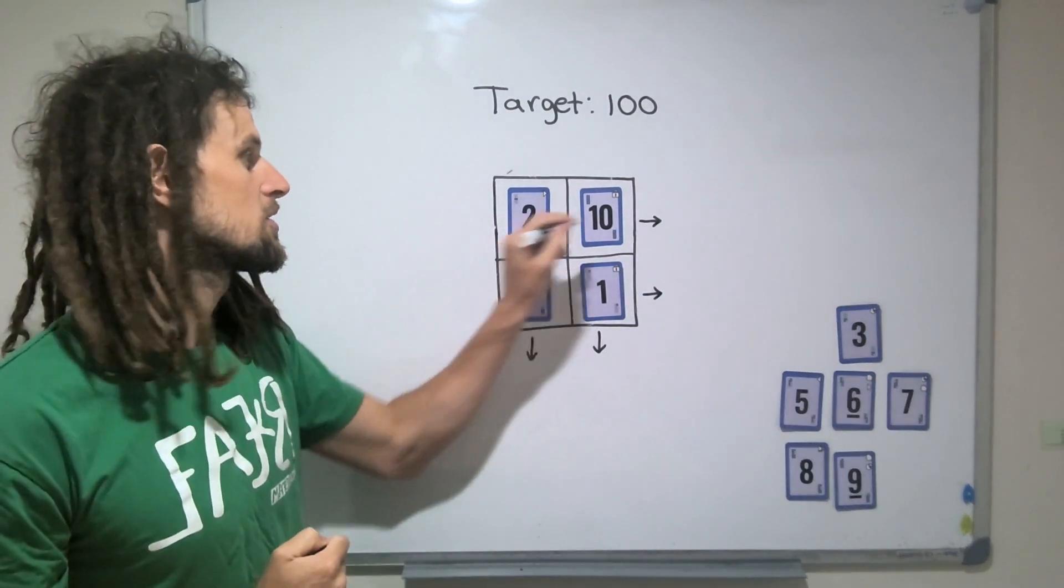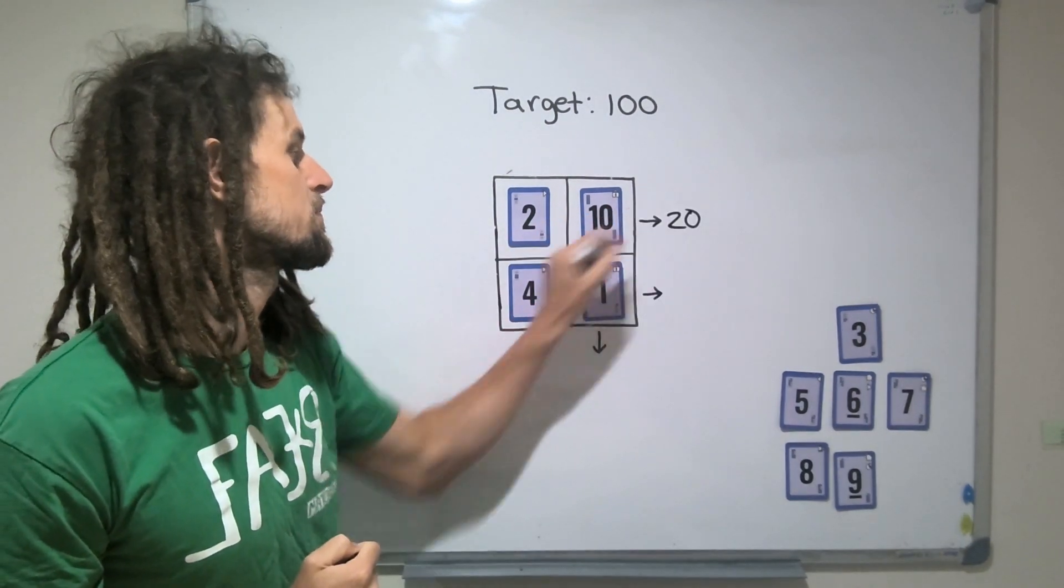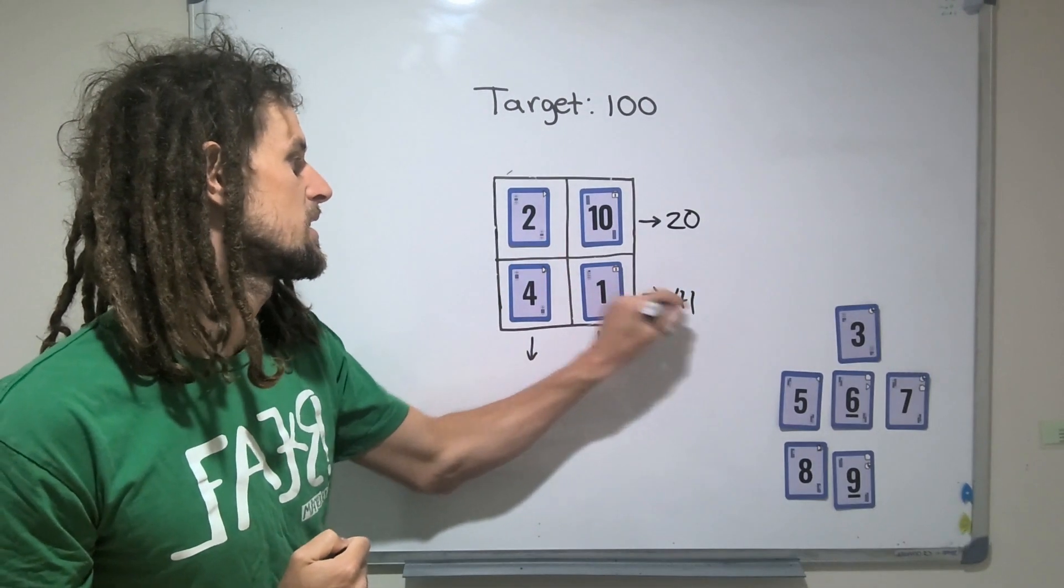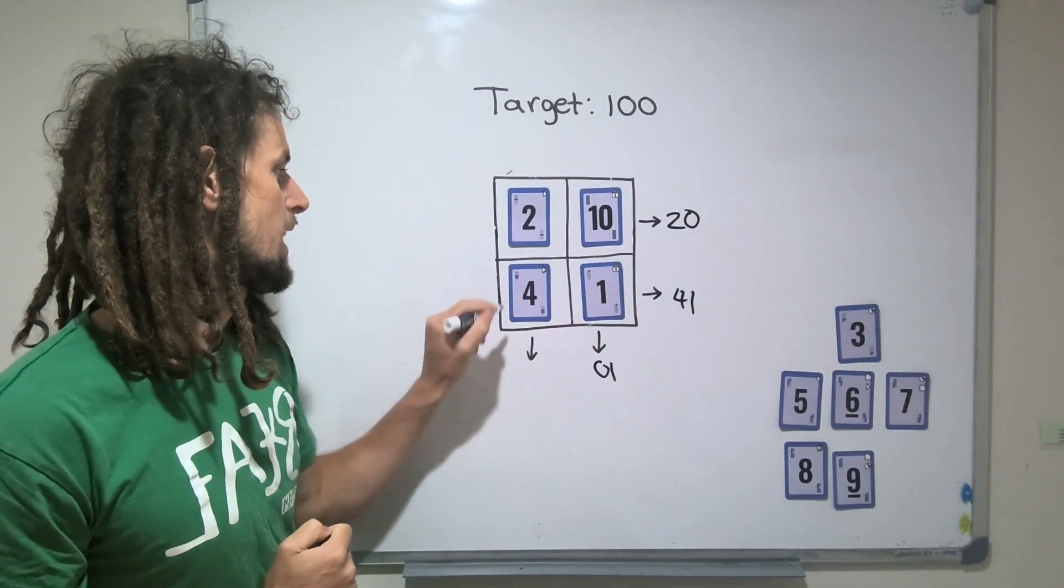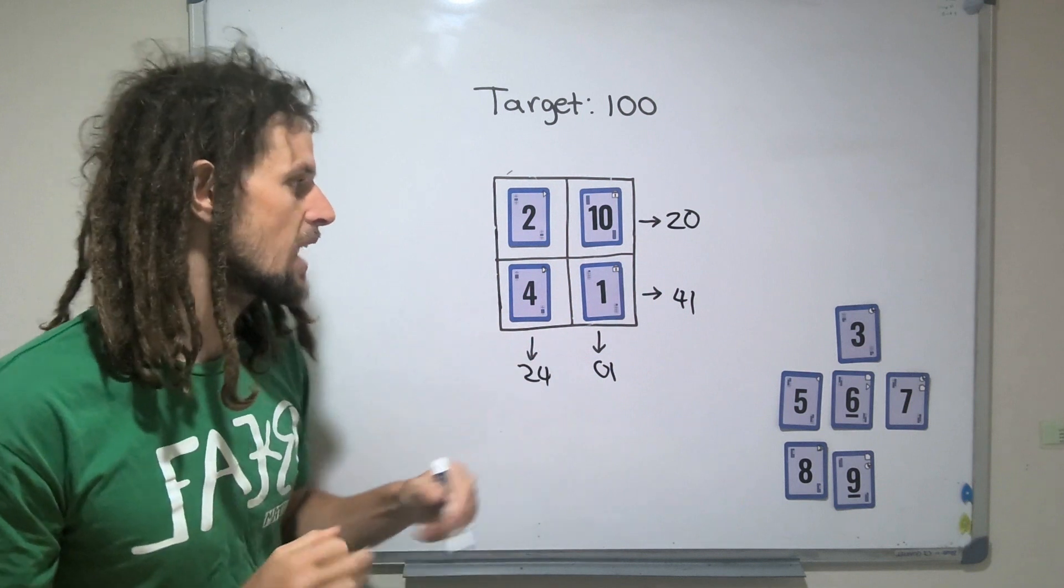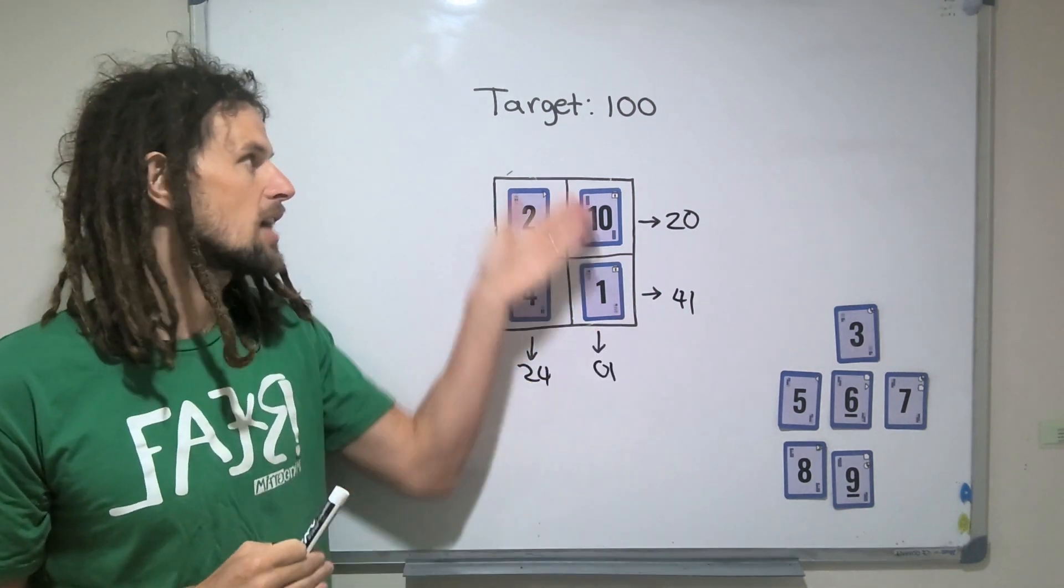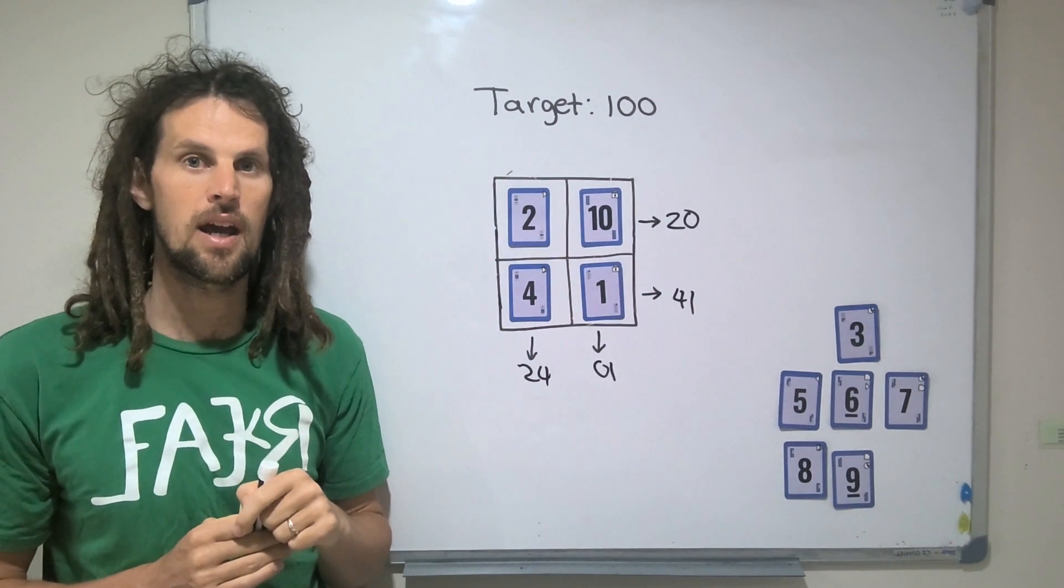Tens in this case are zeros. So the number here would be 20, this number would be 41, this would be 1, and this would be 24. And then we add up all of these values, and hopefully we'll get somewhere close to 100.